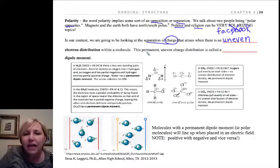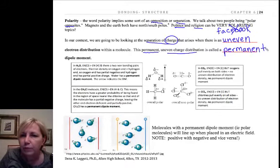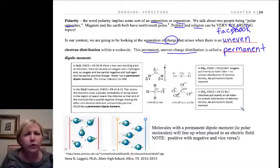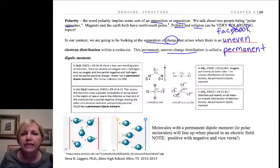And we end up with a permanent, uneven distribution of electrons, and it's called a permanent dipole, two poles, moment. I don't know where the word moment came up. It's probably got a terminology that I just haven't read in a long time. So permanent dipole moment.